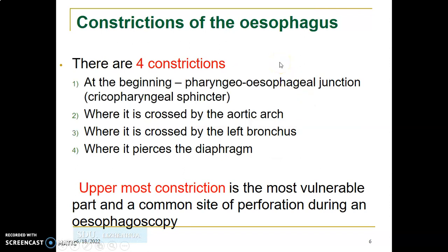The esophagus has four constrictions. The first is at the pharyngoesophageal junction, caused by the cricopharyngeus muscle forming the cricopharyngeal sphincter. The second is where it is crossed by the aortic arch, the third where crossed by the left bronchus, and the fourth at the esophageal hiatus of the diaphragm at T10. The uppermost constriction is the narrowest and most vulnerable site of perforation during endoscopic procedures.